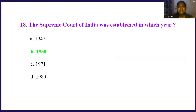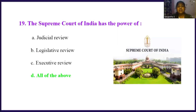The Supreme Court of India was established in: Option A, 1947. Option B, 1950. Option C, 1971. Option D, 1980. The right answer is option B, 1950. Next, the Supreme Court of India has the power of: Option A, judicial review. Option B, legislative review. Option C, executive review. Option D, all of the above. The right answer is option D, all of the above. The Supreme Court of India has the power of judicial review, legislative review, as well as executive review.